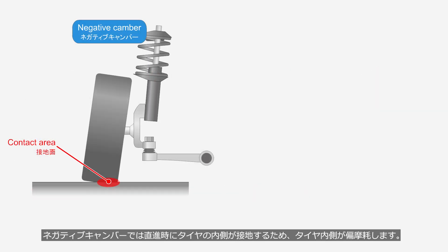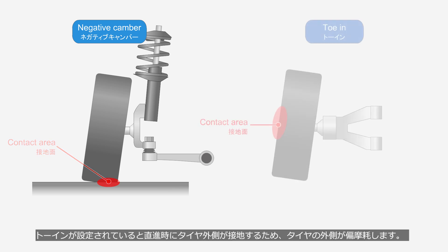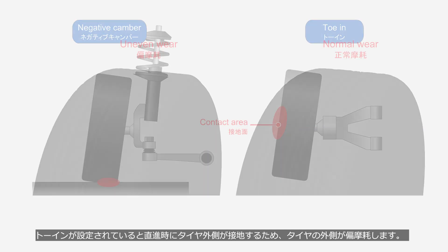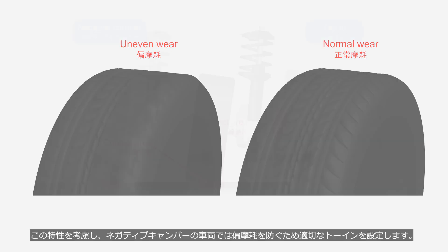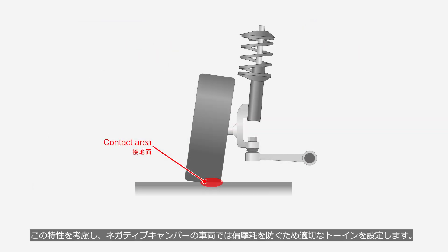When negative camber is set, the inside of the tire makes contact with the ground during straight driving, causing uneven wear on the inner side of the tire. When toe-in is set, the outside of the tire makes contact with the ground during straight driving, causing uneven wear on the outer side. Considering this, vehicles with negative camber are equipped with appropriate toe settings to prevent uneven tire wear.